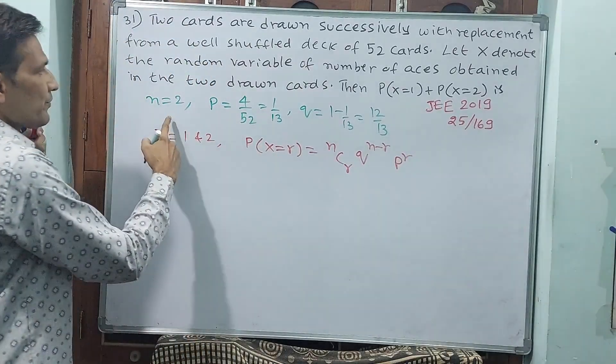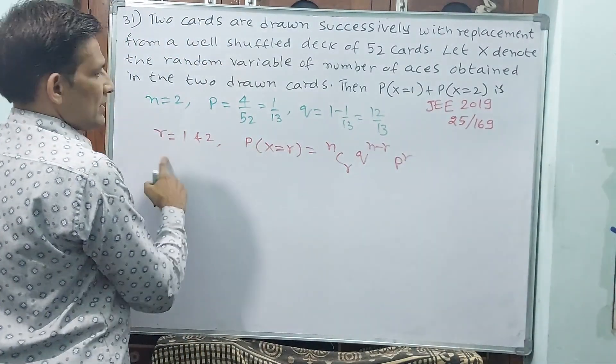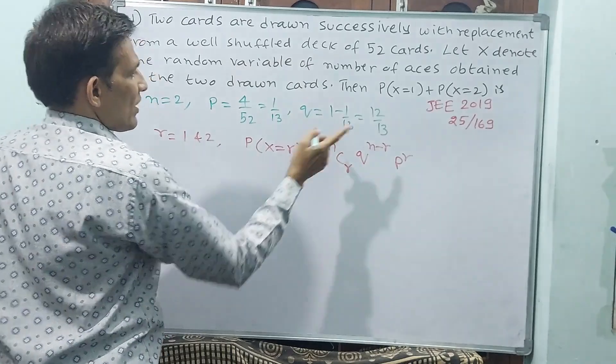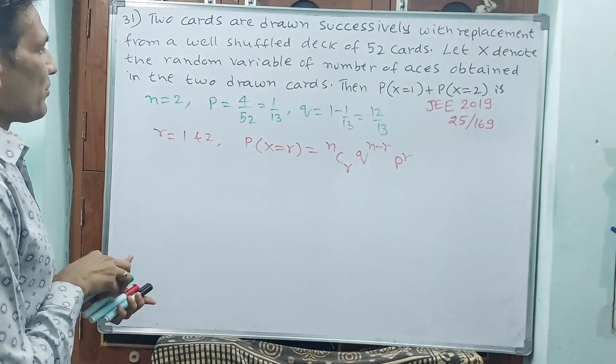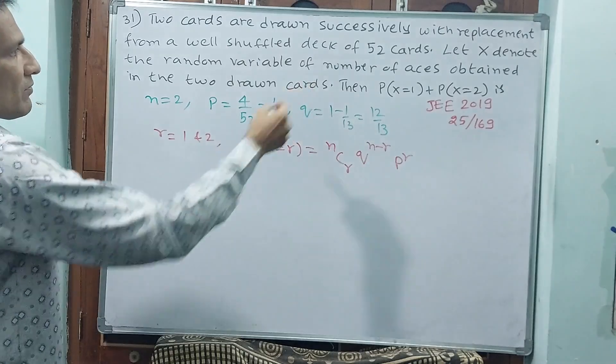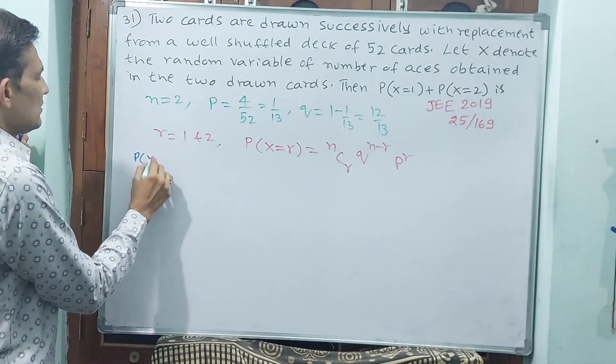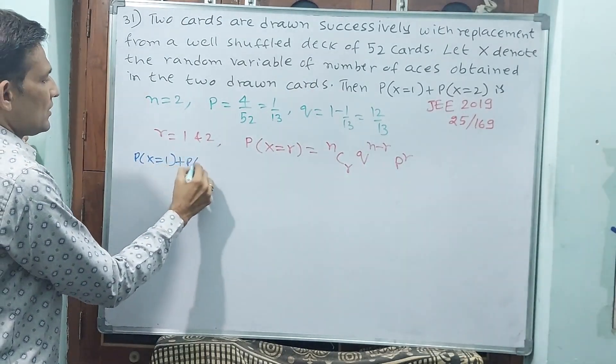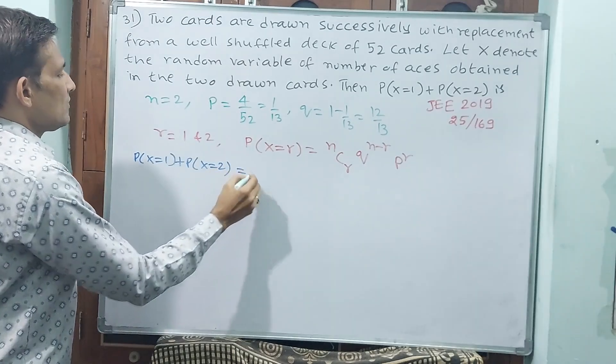See, n you are having, r you are having, p you are having, q you are having. That's all. Now, let us substitute them. P(X=1) plus P(X=2) is equal to.